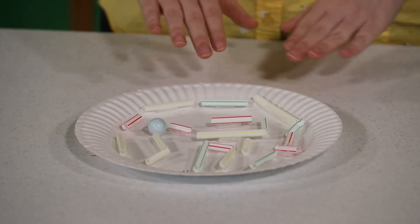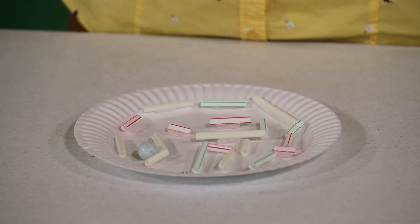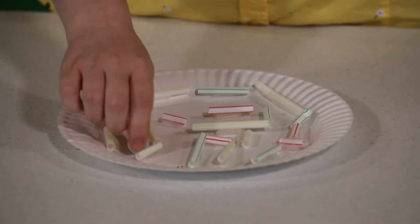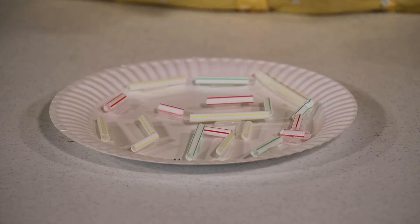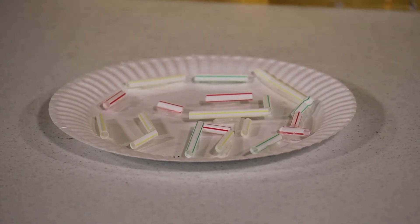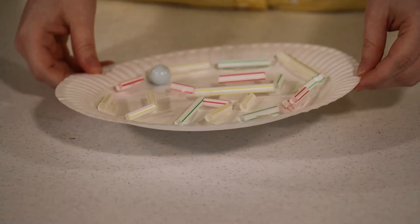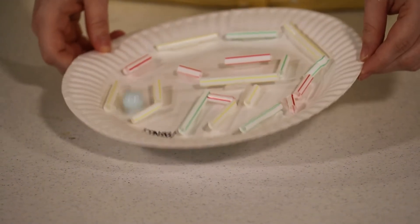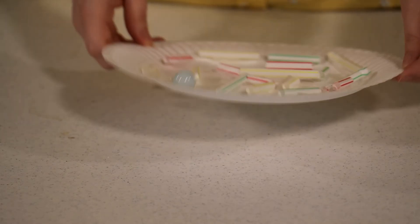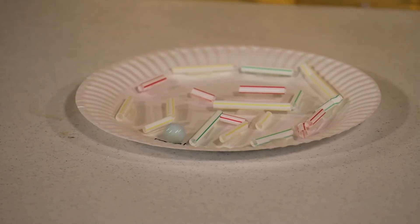So after you attach your straws with either glue or tape, you'll take your marble. Also, I suggest writing start and finish so you know where to start and finish your maze. From there, you'll be able to roll it around just like that, and you might hit a dead end, but ultimately you end up back at the finish line.